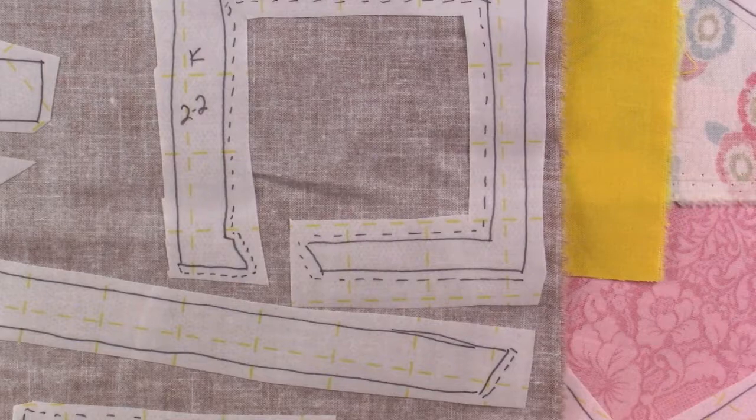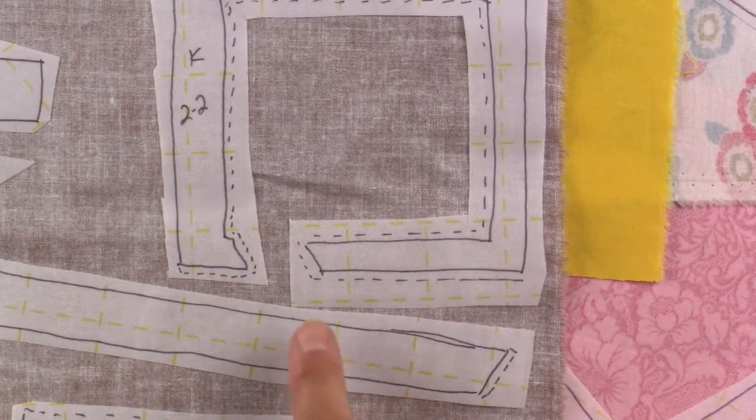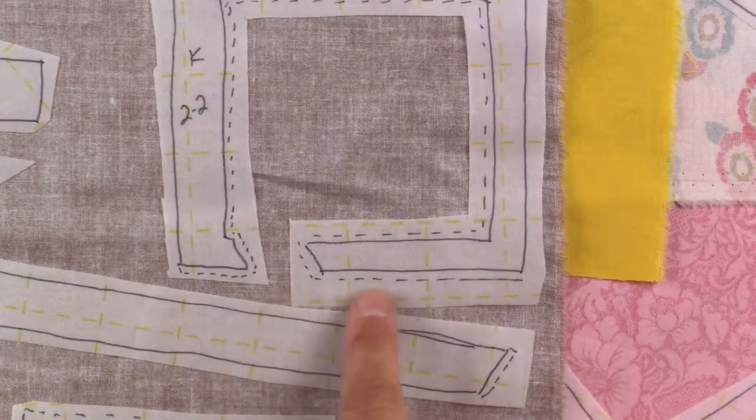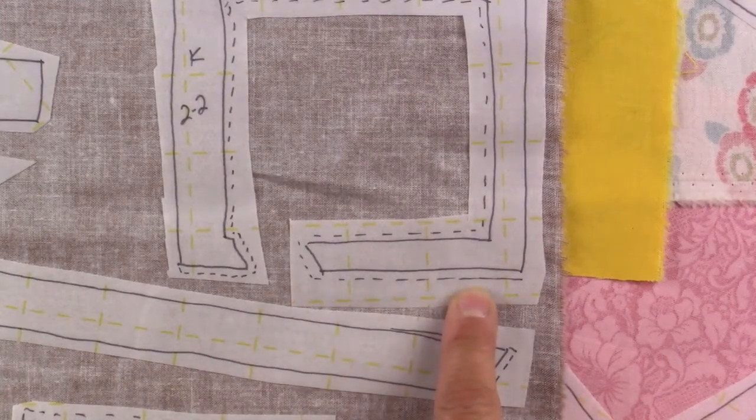Once you have traced all of your pieces onto the Steam-A-Seam, you're going to roughly cut out the Steam-A-Seam outside the dashed or solid lines.